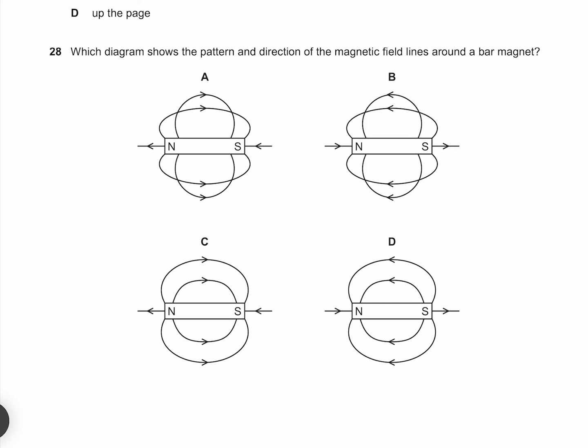Which diagram shows the pattern and direction of the magnetic field lines around a bar magnet? First of all, our magnetic field lines must go from north to south, and must also point south. Which these do, and these don't. Our answer must therefore be C.